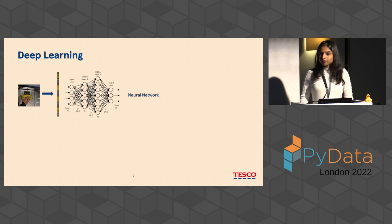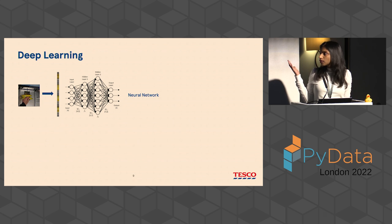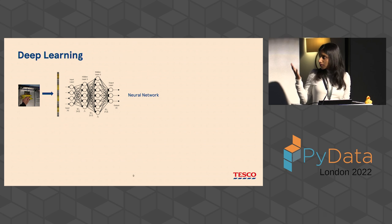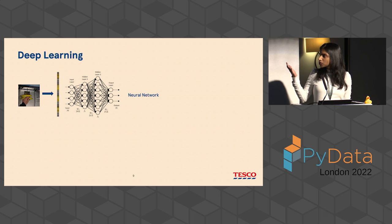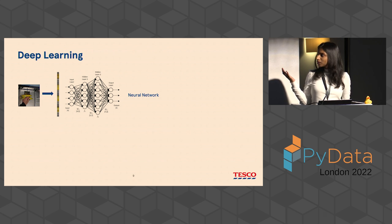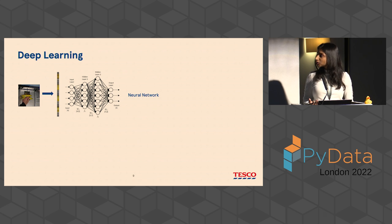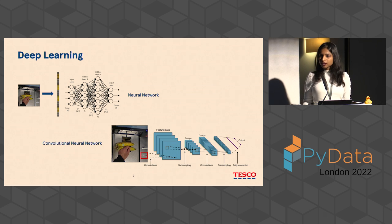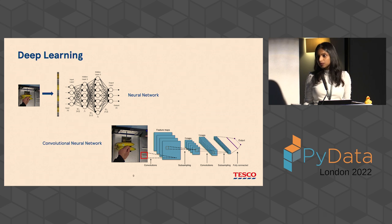A quick refresher on deep learning. Traditional neural networks have multiple fully connected layers where each neuron is connected to every neuron from the previous layers. You could treat an image as a vector of numbers and pass it through, but an image is a 2D input and you lose a lot of spatial information that way. That's the reason convolutional networks were so helpful — they encode spatial information into the feature representations learned through the network.